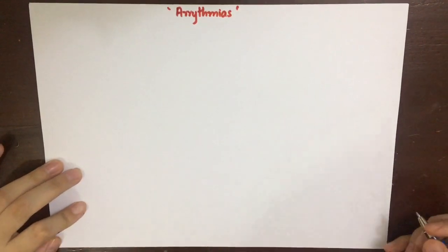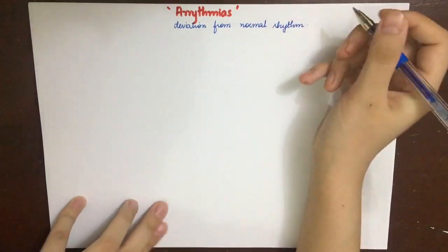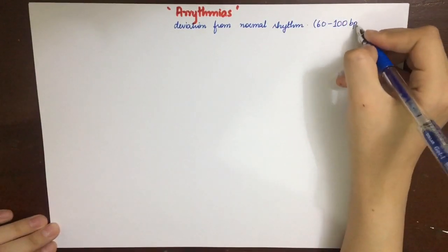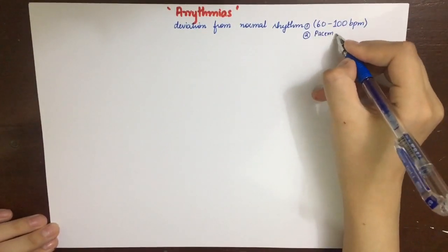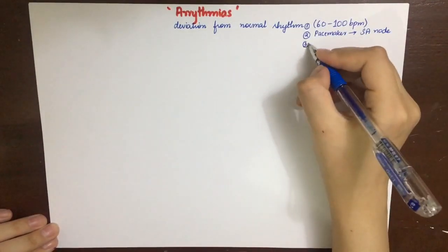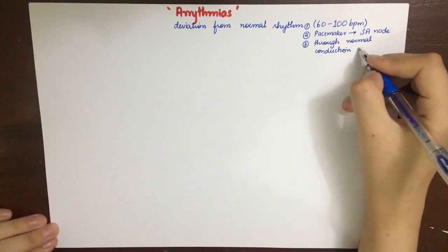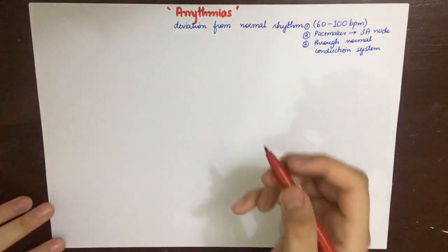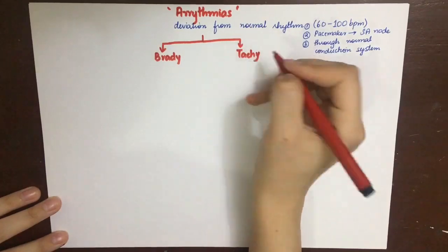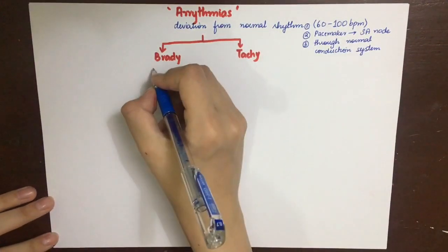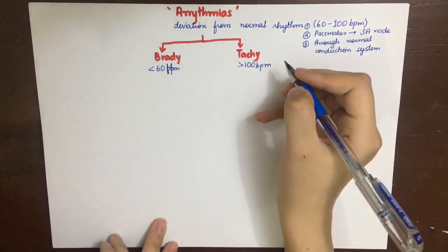Now that we know about normal action potential generation and propagation, we'll look at arrhythmias. Arrhythmias are deviations of the heart from a normal rhythm. Normal rhythm is a heart rate of 60 to 100 beats per minute, with the SA node as the primary pacemaker and the action potential transmitted through normal conduction system pathways. If any of these three conditions are not met, arrhythmias will result. There are two types: bradyarrhythmias, with a heart rate below 60 beats per minute, and tachyarrhythmias, with a heart rate above 100 beats per minute.